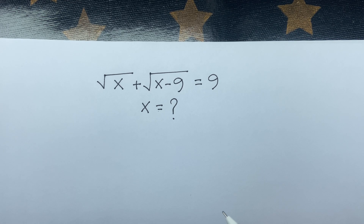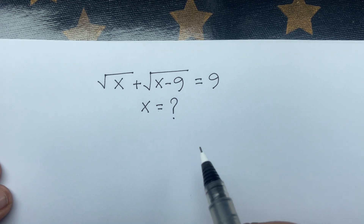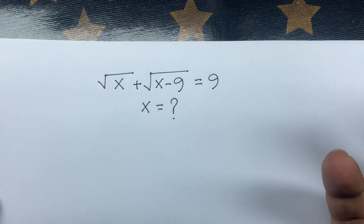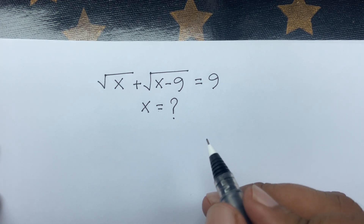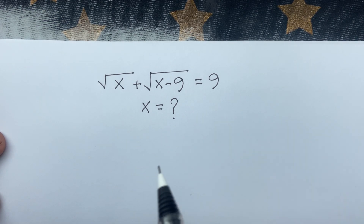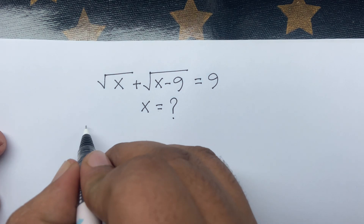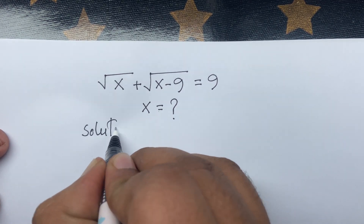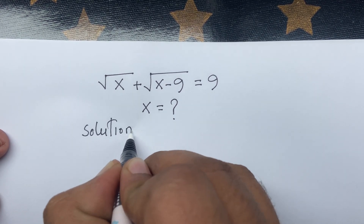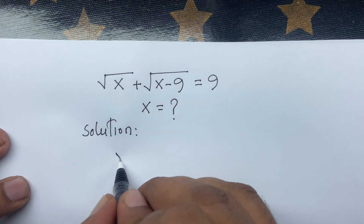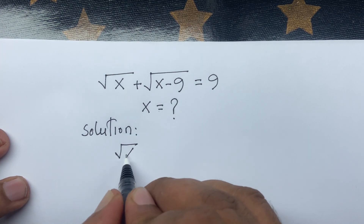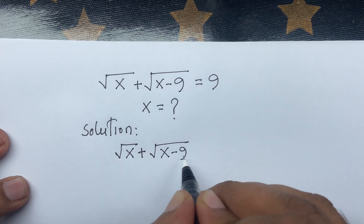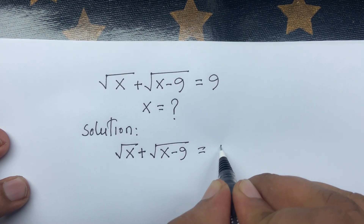Hello everyone. How to solve this question: square root of x plus square root of x minus 9 is equal to 9. We'll find out what is the value of x in this interesting math question. So, solution: our question is square root x plus square root x minus 9 is equal to 9.